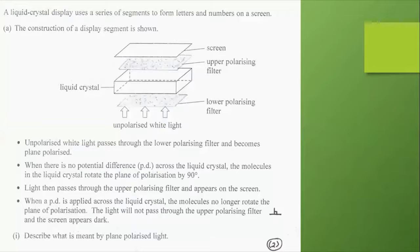Another type of question deals with liquid crystal displays. Let's read through this very carefully. A liquid crystal display uses a series of segments to form letters and numbers on a screen. The construction of a display segment is shown. We've got a lower polarizing filter, a liquid crystal, an upper polarizing filter, and the screen, which is what we look at. Coming from below, we've got some unpolarized white light.